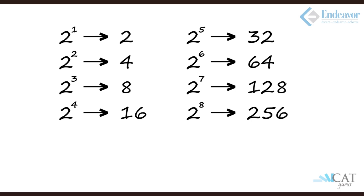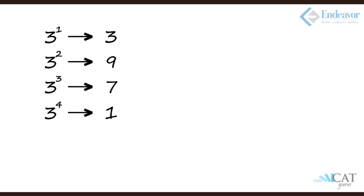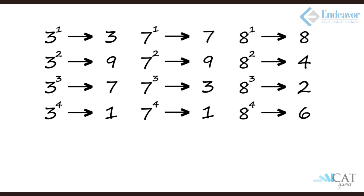Same thing happens with a different number like 3, it's 3, 9, 7, 1. Or 7, it's 7, 9, 3, 1. Or say 8: 8, 4, 2, 6. So 2, 3, 7, and 8, these are numbers which alternate on every 4.